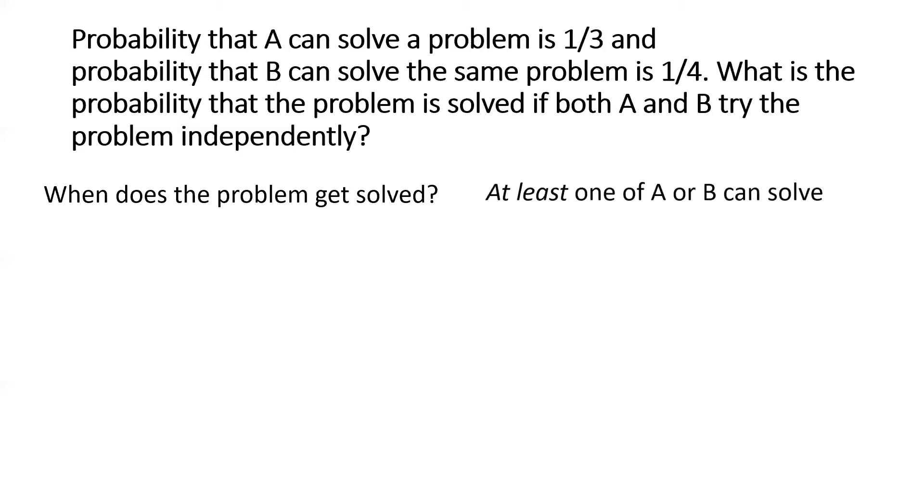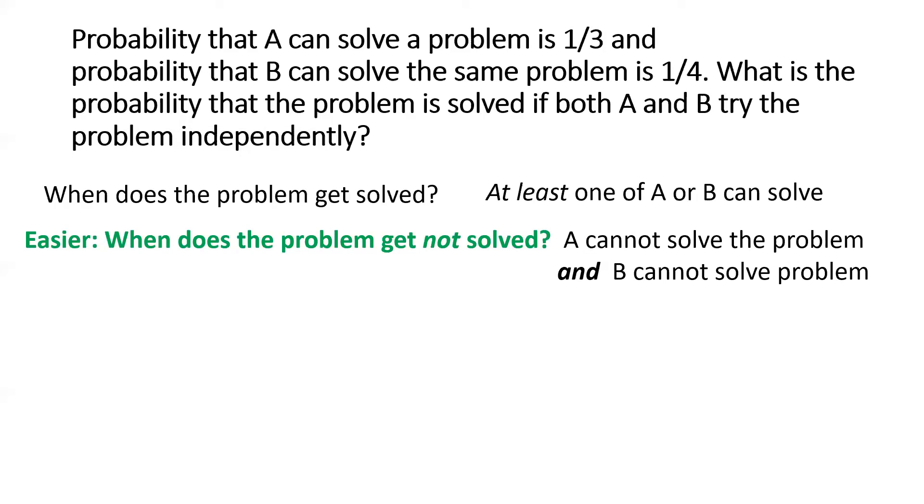When does the problem get solved? The problem gets solved when at least one of A or B can solve. Both of them do not necessarily have to solve the problem successfully. Even if one or the other can solve it successfully, the problem gets solved. So, what is the complement of this? That might be the easier question to answer in this case. When does the problem not get solved? That's when A cannot solve the problem and B cannot solve the problem. Both A and B are unsuccessful in solving the problem and that's when the problem does not get solved when both A and B try the problem independently.